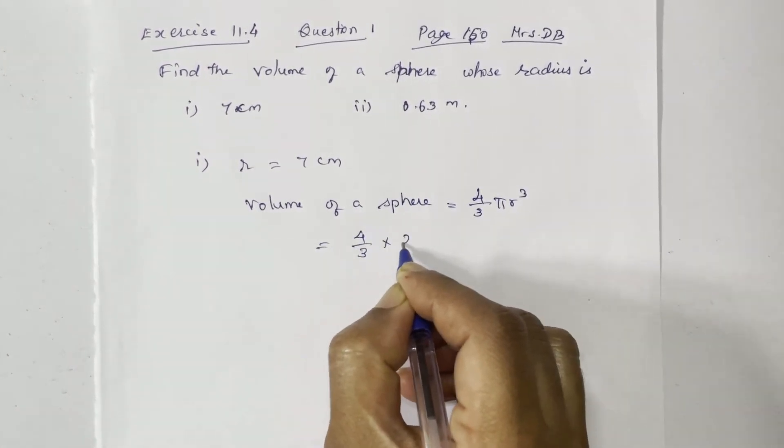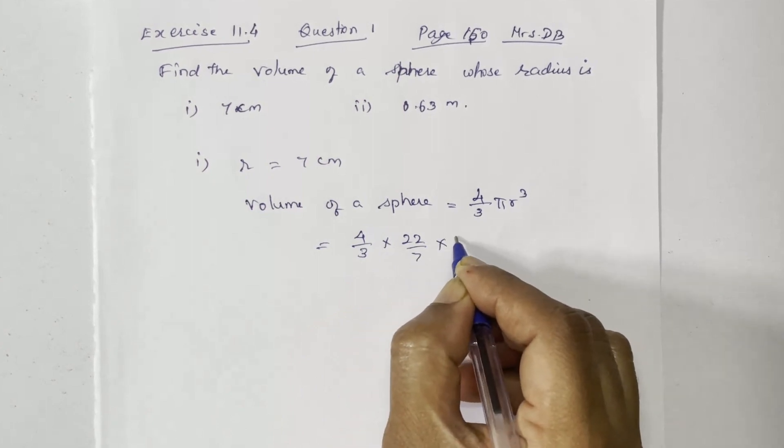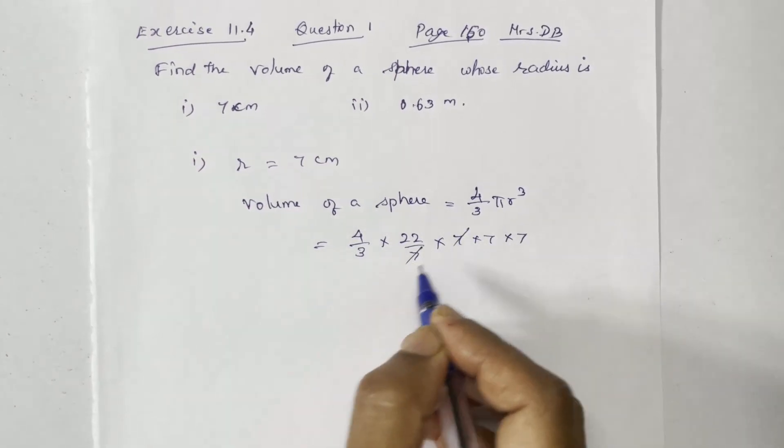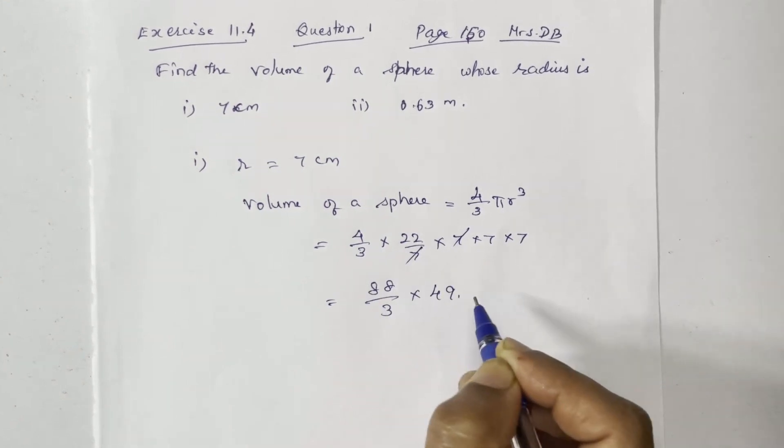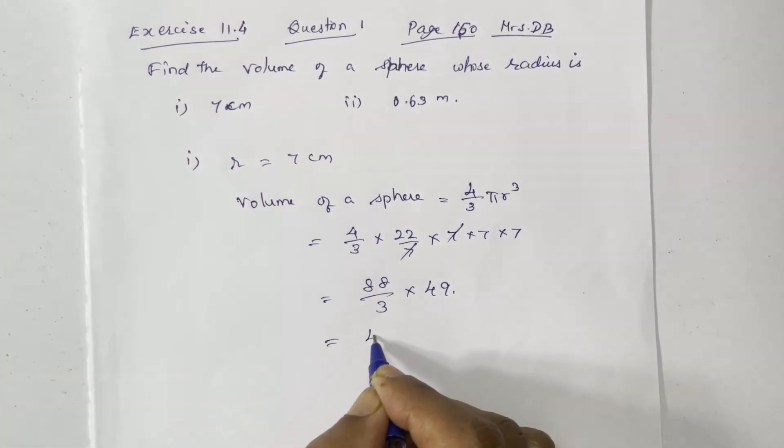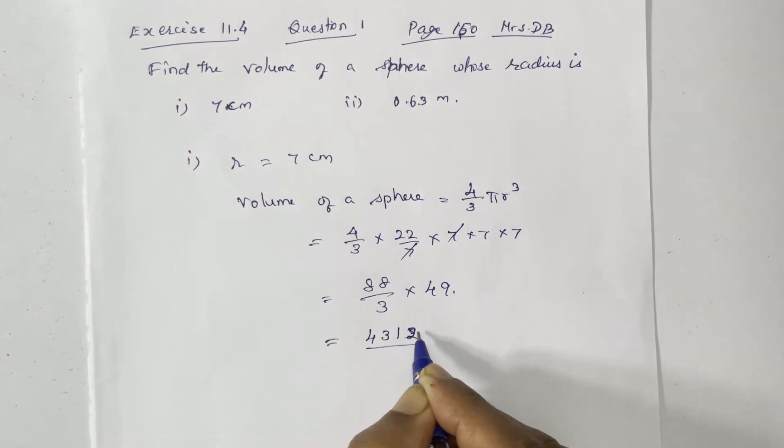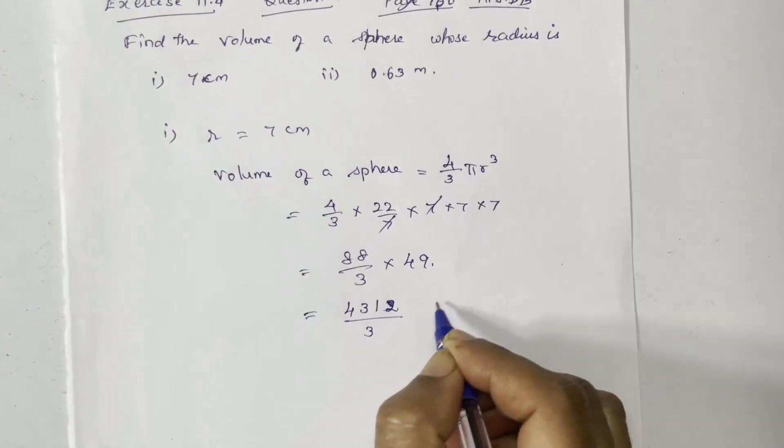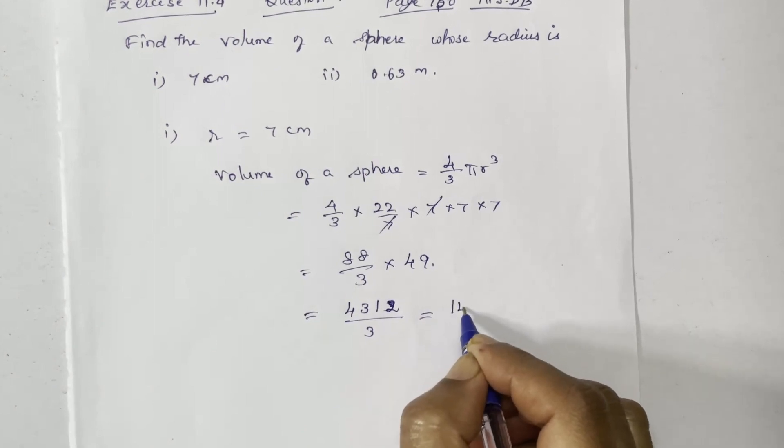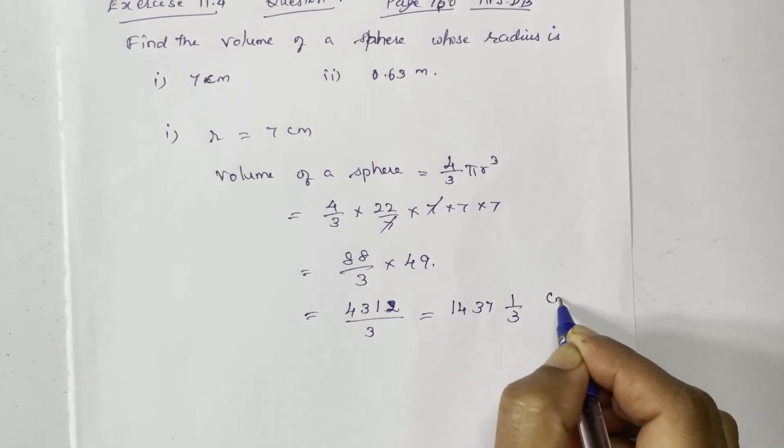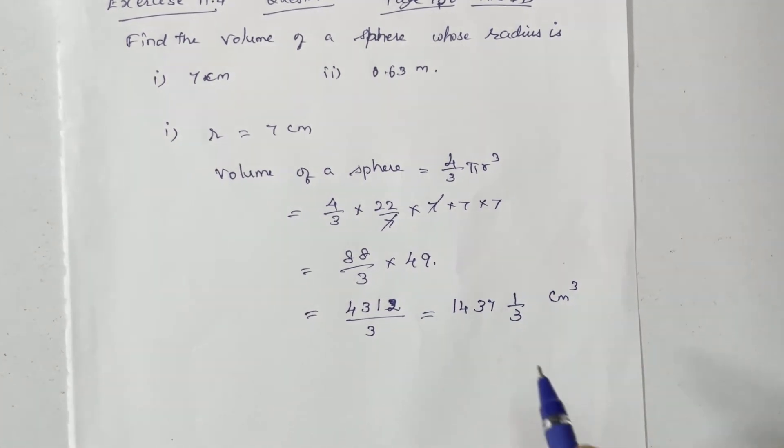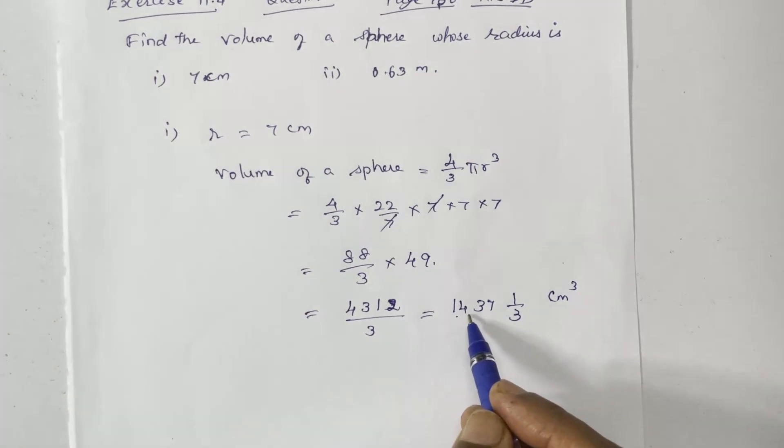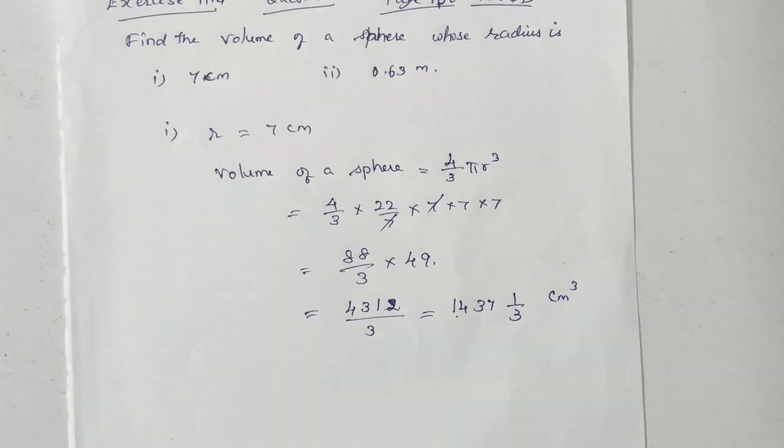4 by 3 into 22 by 7, r is 7. Cancel out, 88 by 3 into 49. Multiply, 4312 divided by 3. Divide it out.